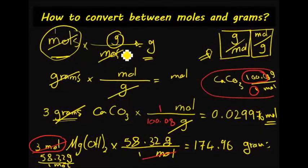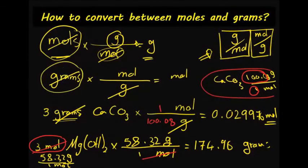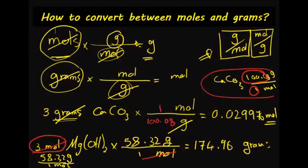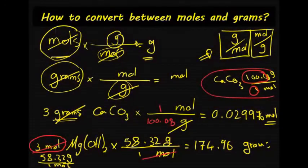That's how you do it. Whenever you see moles on the top, put moles on the bottom on the other side. Whenever you see grams on the top, put grams on the bottom on the other side. That way grams cancel out or moles cancel out, and you can do your conversion. Please contact me by email if you have any questions. Thank you so much for watching.